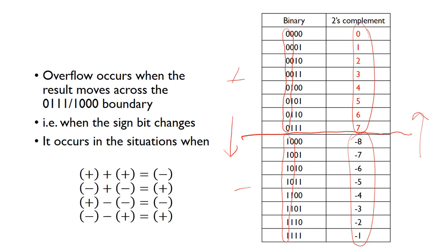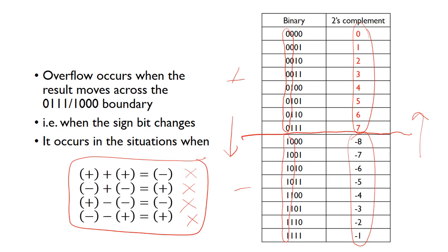The four situations where overflow occurs are: if you do a positive plus a positive and get a negative answer, that's clearly wrong because you can't add two positive numbers and get a negative result. If you do a minus plus a minus, the answer should get more negative, so if you end up getting a positive, that's an incorrect situation. A positive subtracting a negative should get bigger, so if it ends up being negative, something has gone wrong. And if you have a negative number and subtract a positive, it should get more negative, but if it ends up being positive, then overflow occurred.